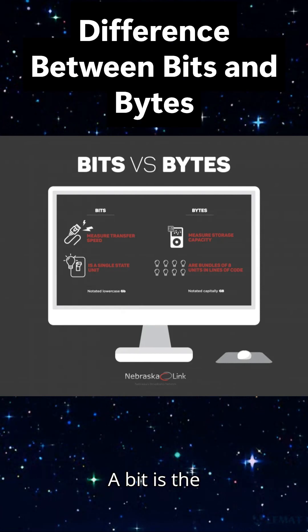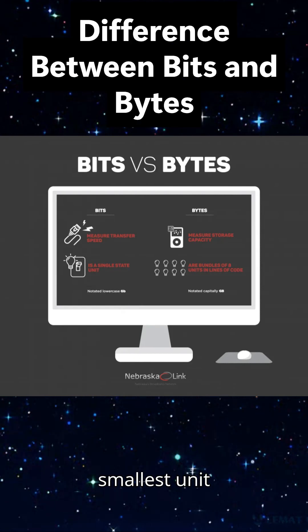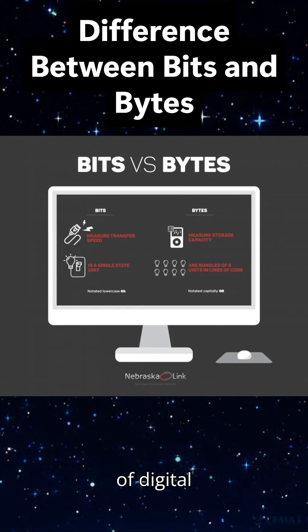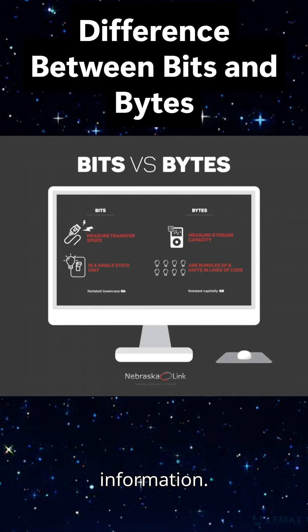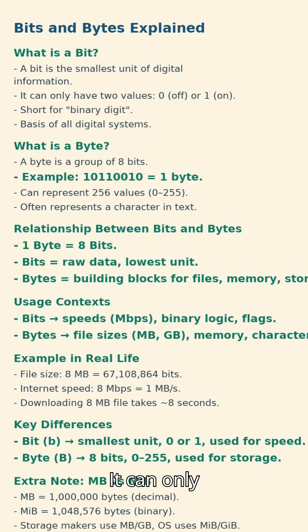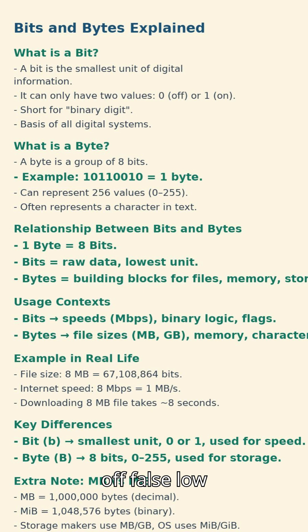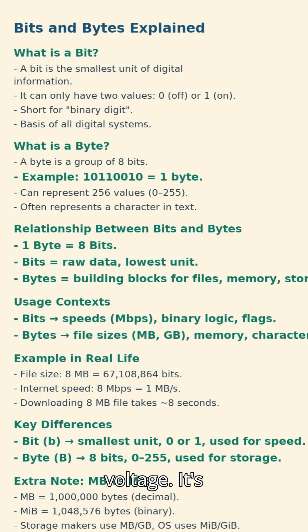What is a bit? A bit is the smallest unit of digital information. It can only have two possible values: zero (off, false, low voltage) or one (on, true, high voltage).